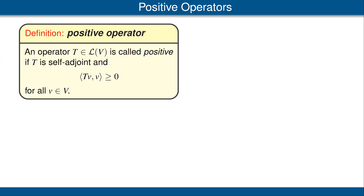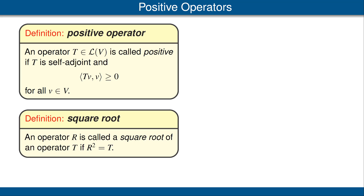It will be useful to review some material about positive operators from the previous section of the book. Recall that a positive operator is defined to be an operator that is self-adjoint and with the property that T of V inner product V is a non-negative number for every vector V. Recall also that an operator R is called the square root of an operator T if R squared is equal to T.